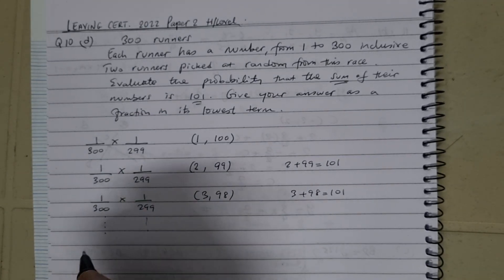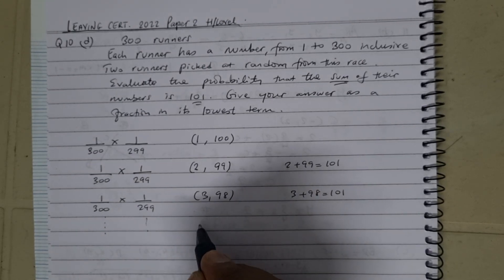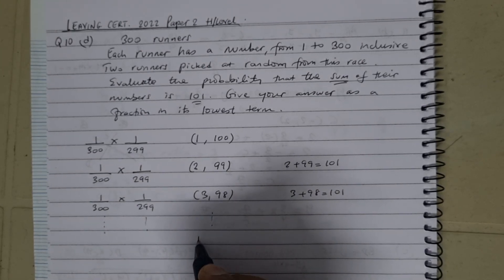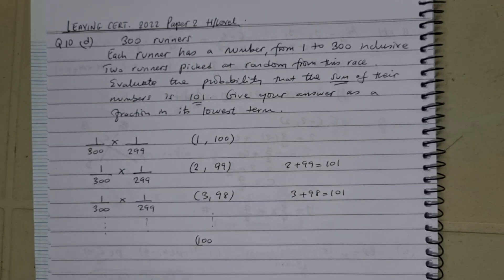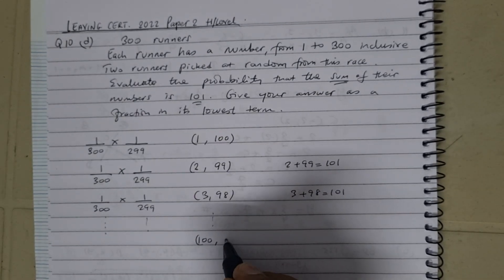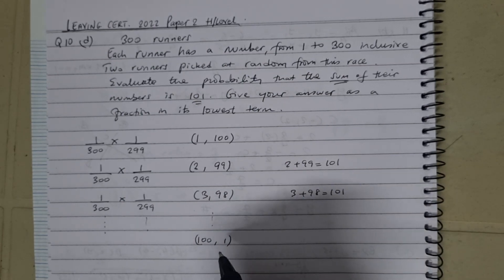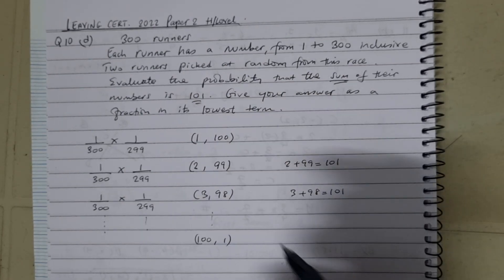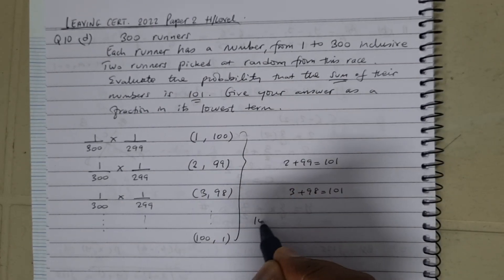Now if you carry on like this, you'll come to a point where you will reach 100. The first runner could be a person who's got 100, and then the other one's got 1. So now we've got 1 to 100—we've got 100 ways of doing this.